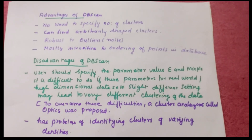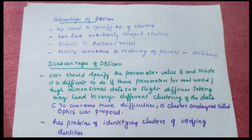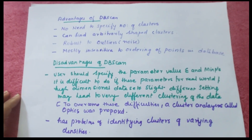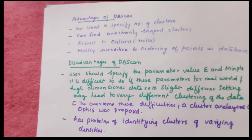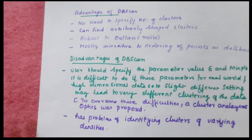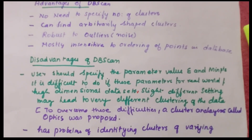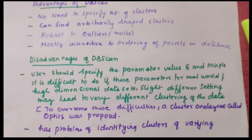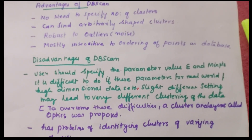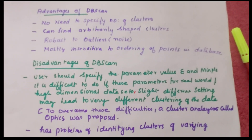The computational complexity of DBSCAN is O(N log N). Advantages: it does not need the number of clusters specified in advance; it can find arbitrarily shaped clusters; it is robust to outliers and noise; and it is mostly insensitive to the ordering of points in the database. Disadvantages: the user must specify epsilon and minimum points, which is difficult for real-world or high-dimensional data. A slight difference in parameter settings may lead to very different clustering results. To overcome this, a method called OPTIC was proposed, which will be studied in the next video. DBSCAN also has difficulty identifying clusters of varying density.